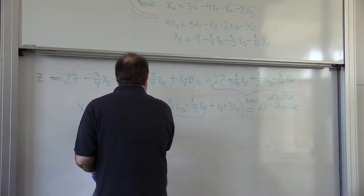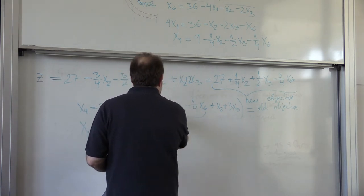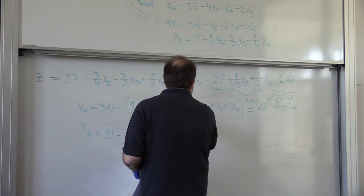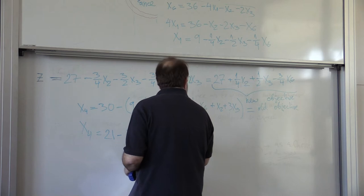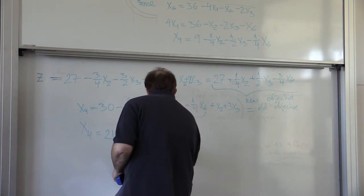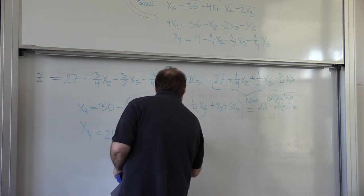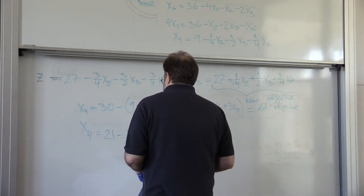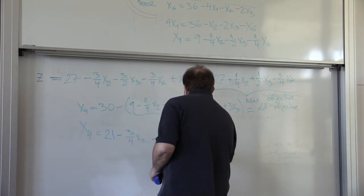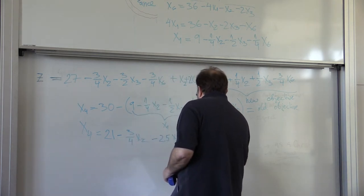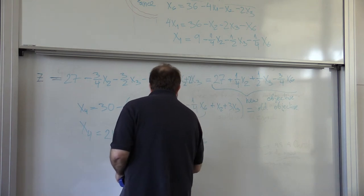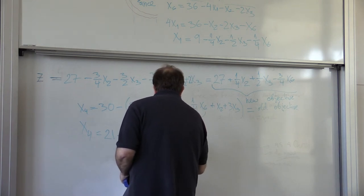Then we have x3. 3x3 minus 1 half x3, this is 2 and a half x3, so it will be minus 2.5 x3. And we have plus 1 quarter x6, let's write this as 5 over 2.